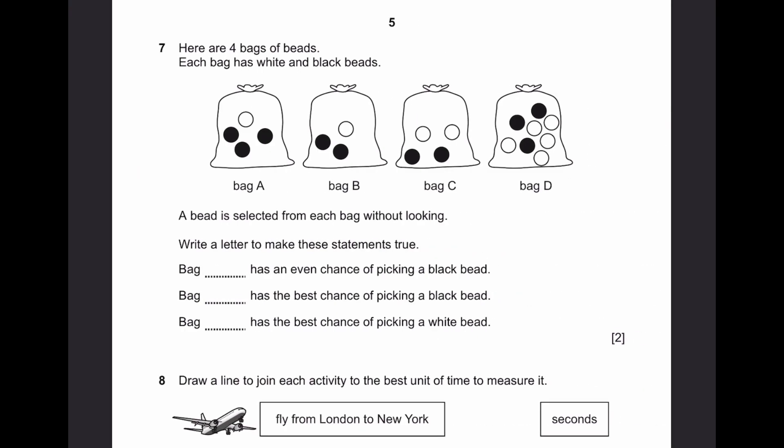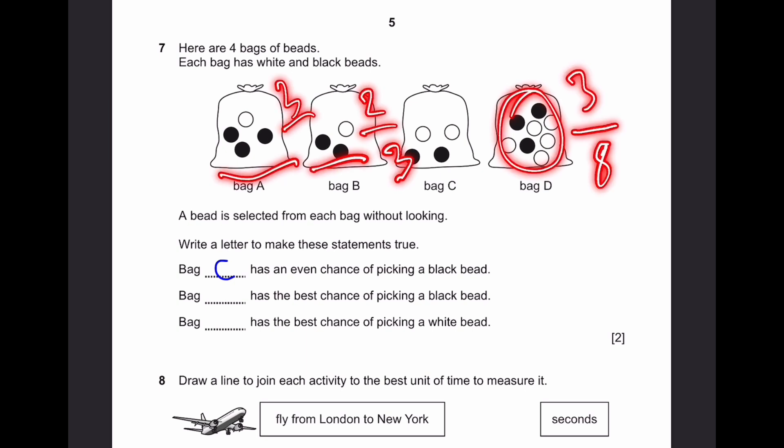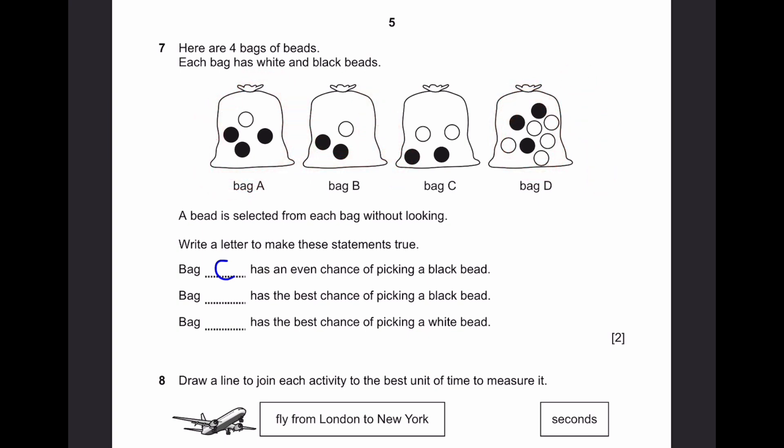Question 7. Here are 4 bags of beads. Each bag is white and black beads. A bead is selected from each one without looking. Write letter to make these statements true. Bag dash has even chance of picking a black bead. Bag C because it has 2 black, 2 white. Bag dash has the best chance of picking a black bead. So this is 3 out of total 8. This is 2 out of total 3. This is 3 out of total 4. Bag A actually has the highest chance. Bag dash has the greatest chance of picking a white bead. Bag D as we just saw.